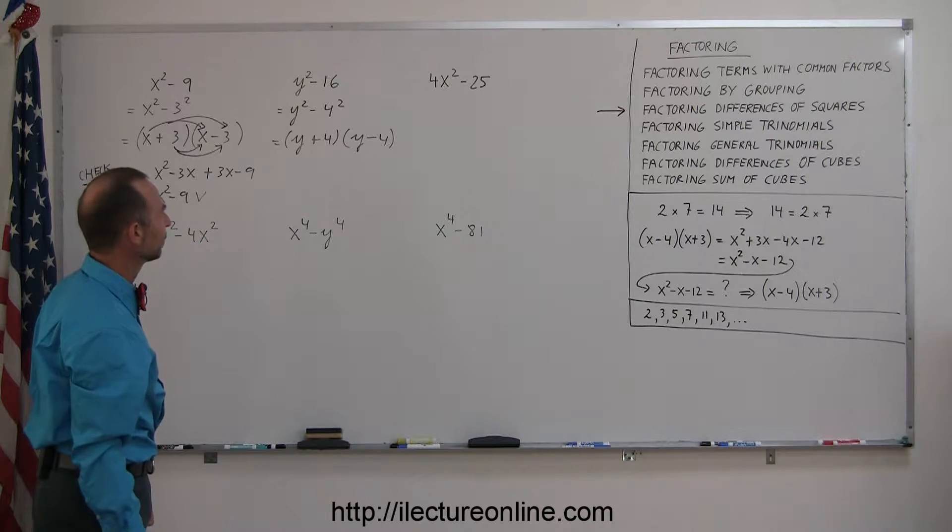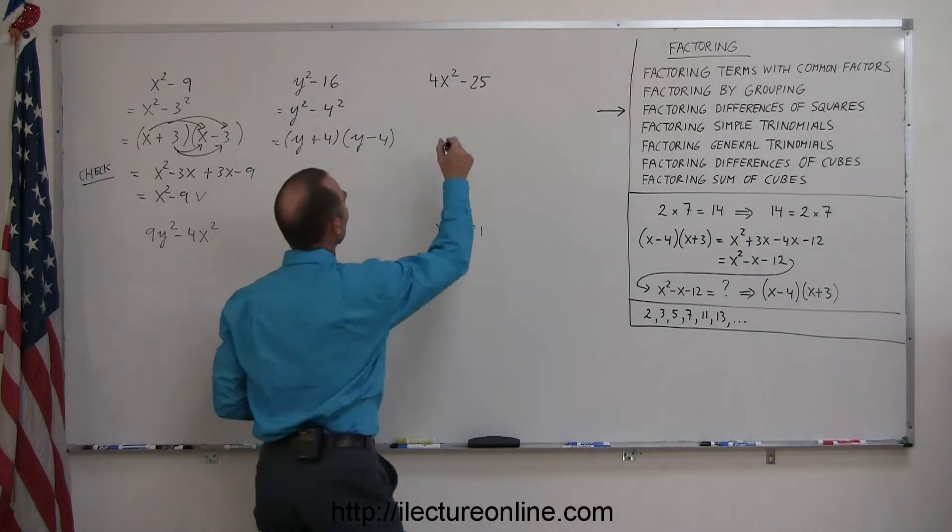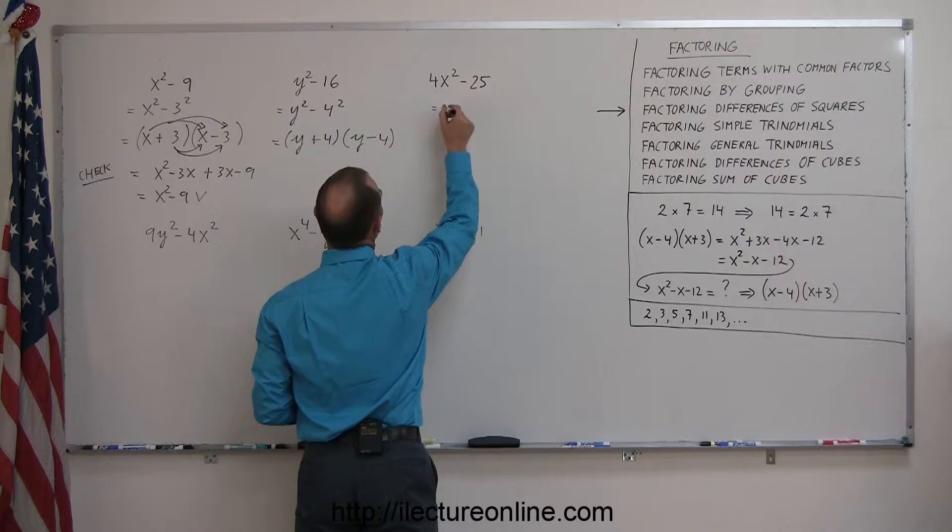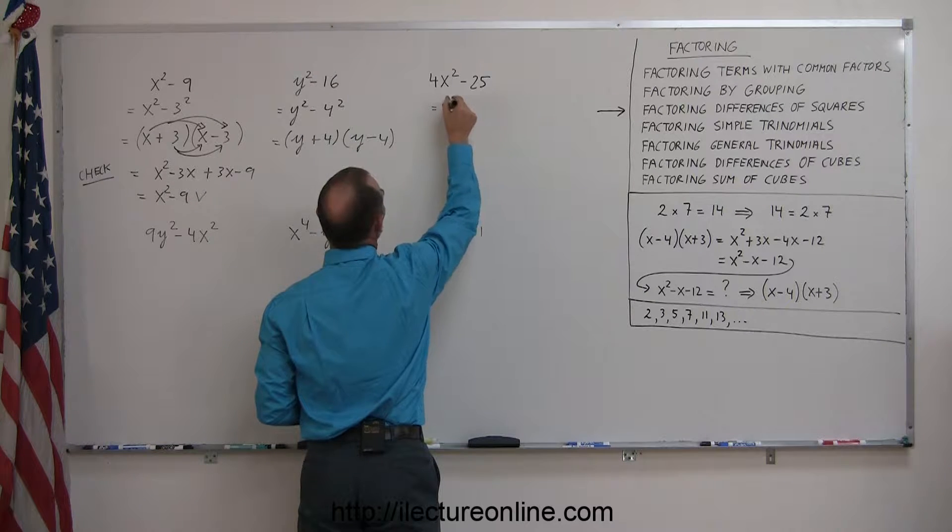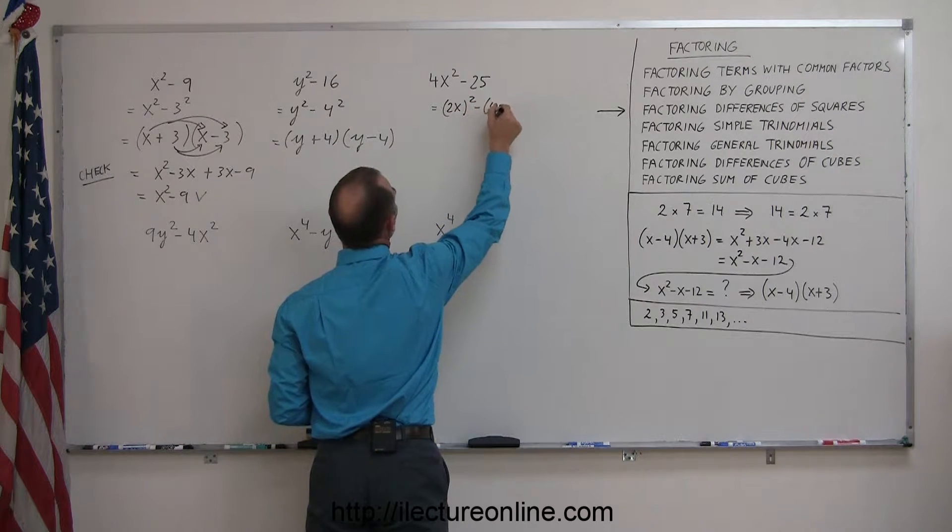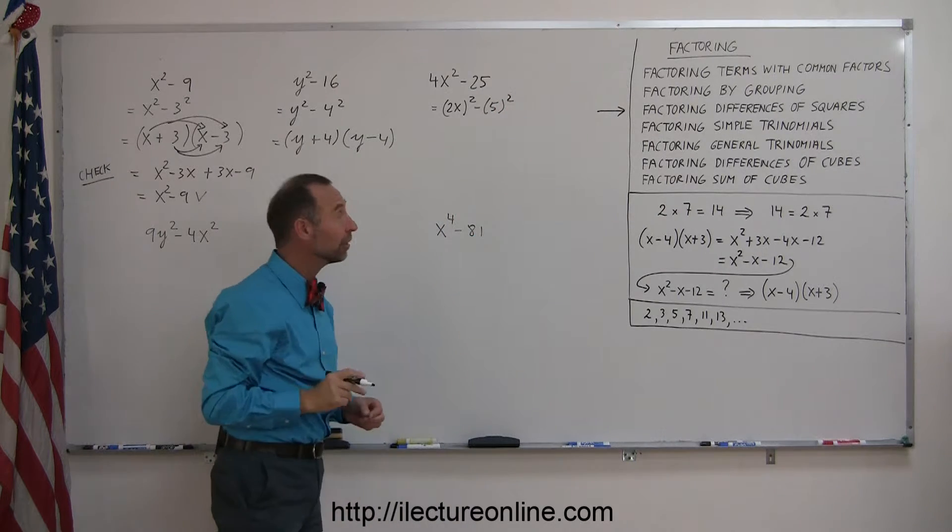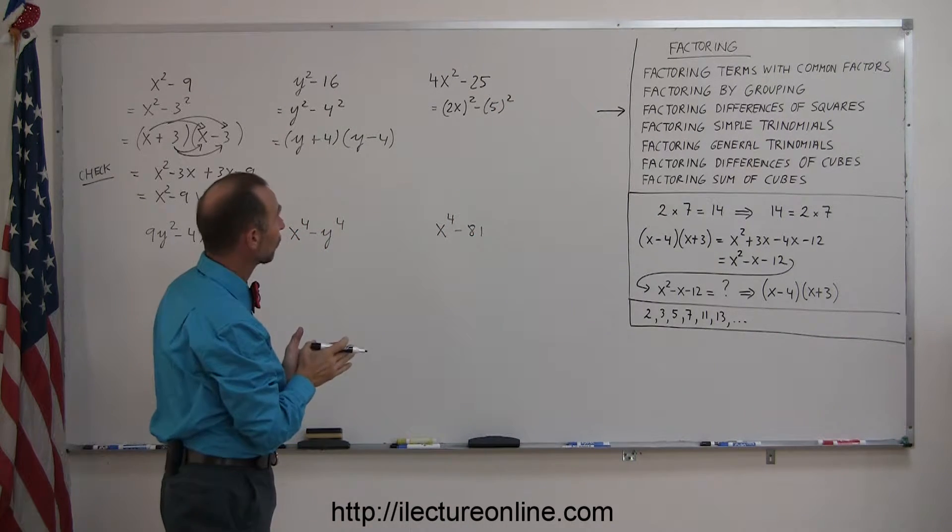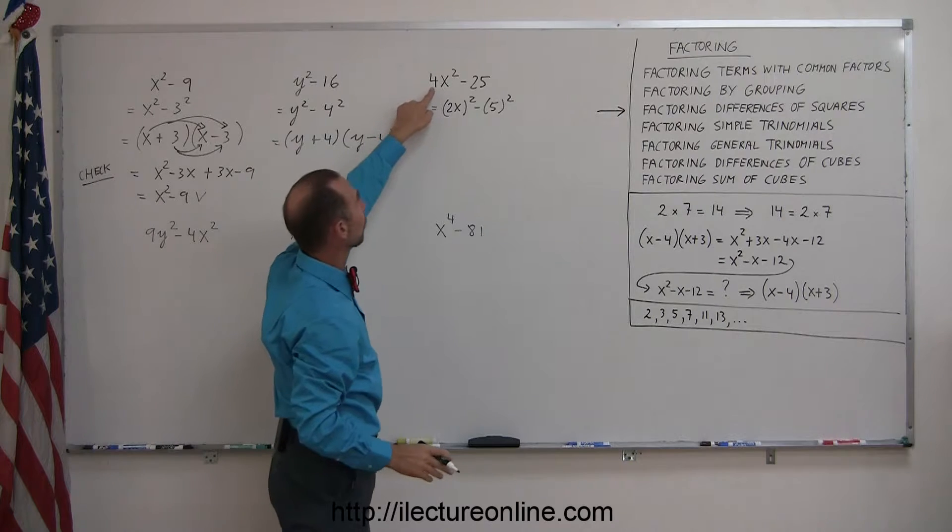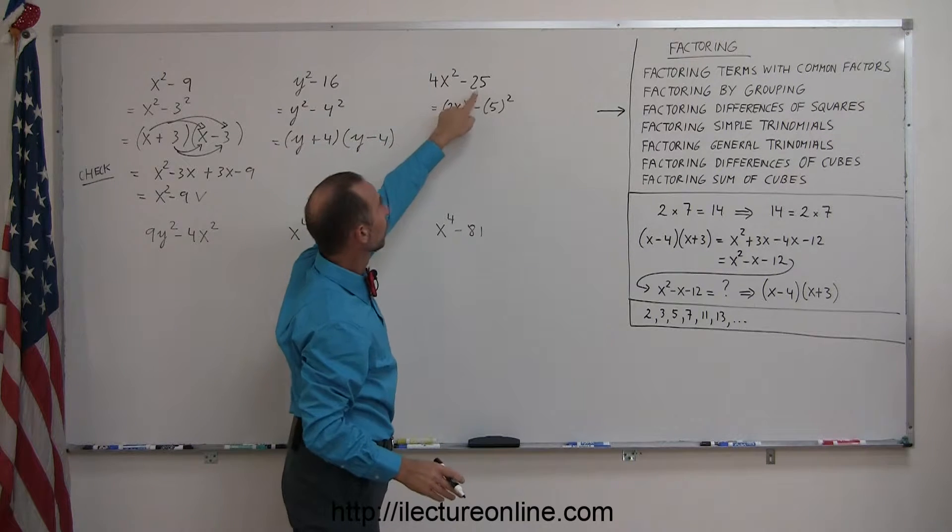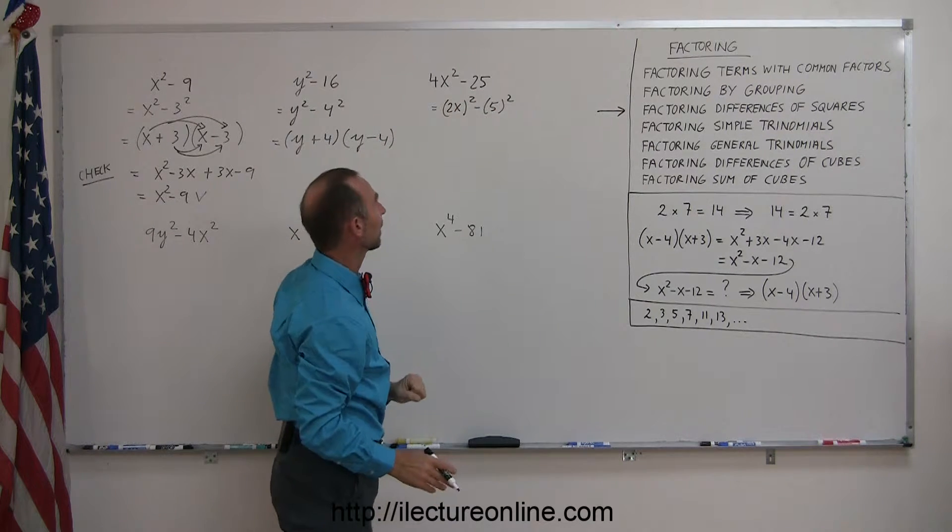Let's take the next one. This is the same as 2x quantity squared minus 5 squared. Now here, you have to be careful, really recognize what's being squared here. So since 4 is a square of 2, we can write it like this. 25 is a square of 5, we write it like this.